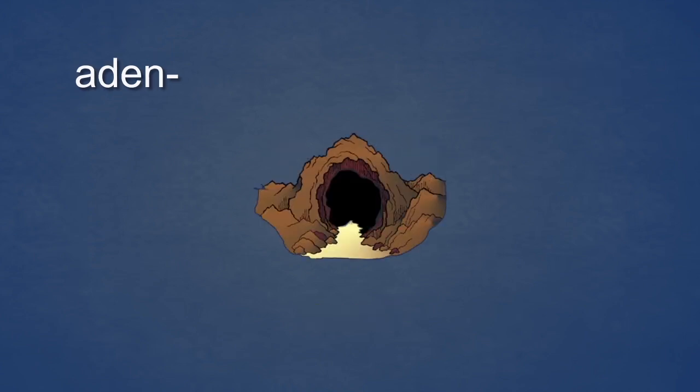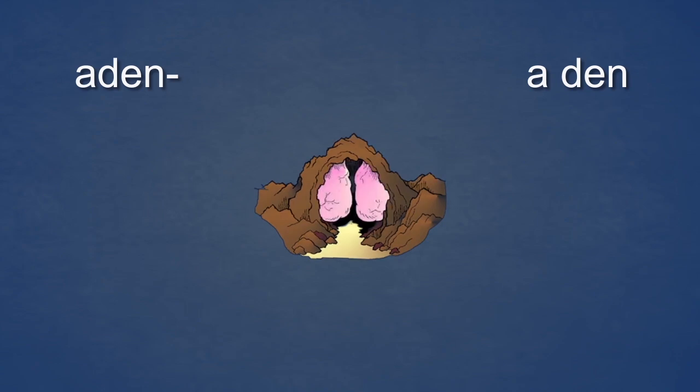Next, the element Aden. Aden sounds like a den. Here, you see a den. Aden means gland. So the image of a den is changed — the den has glands hanging on the walls; they are cold and damp. Aden. Gland.